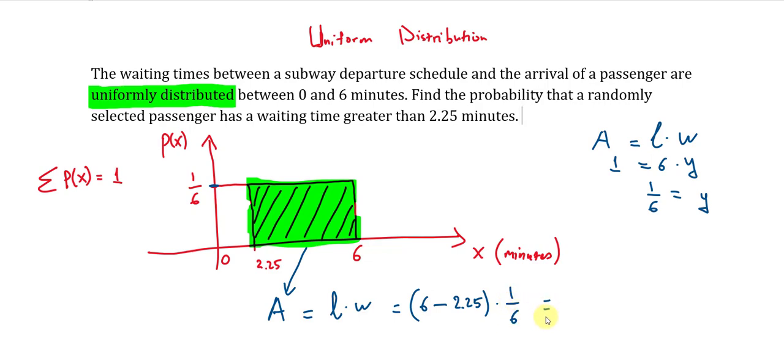And if you do the calculation correctly, 6 minus 2.25, and then multiply by 1 over 6, you should get 0.625. And therefore, the probability that a randomly selected passenger has a waiting time greater than 2.25 minutes is 0.625, or converting that to percentage, that should be 62.5%.